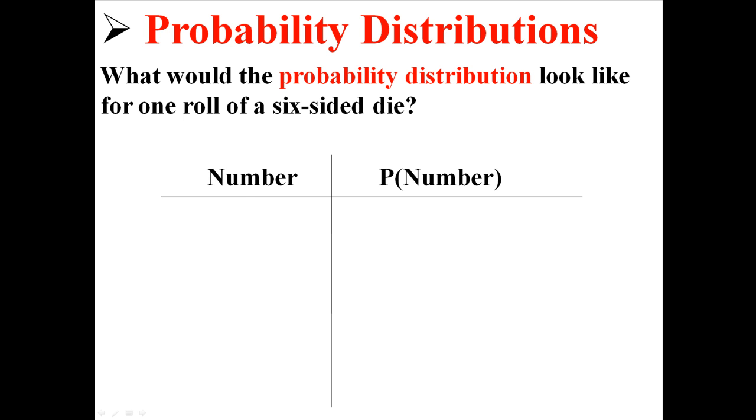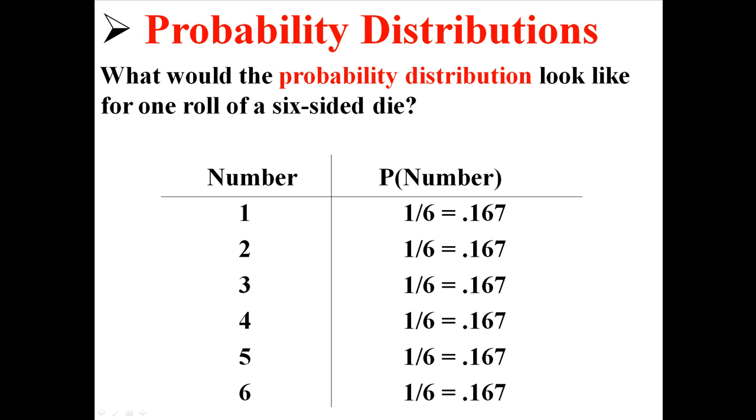So I want to make a table like this. And if you were to roll a die, you could get a one, two, three, four, five, or six. And the probability associated with each of those rolls is one out of six, right?